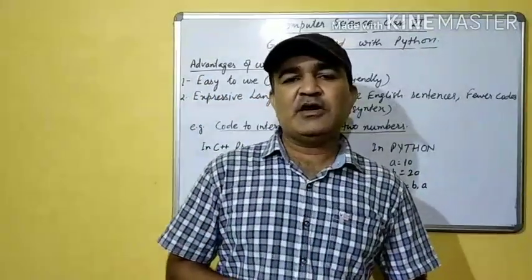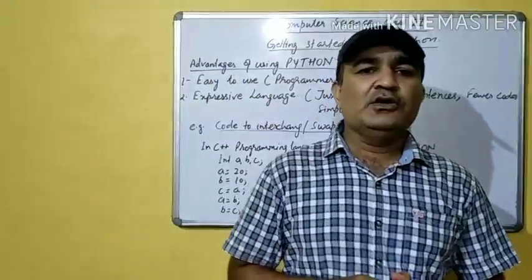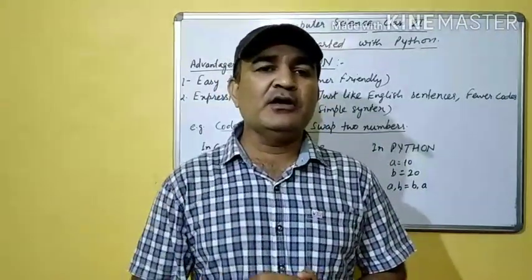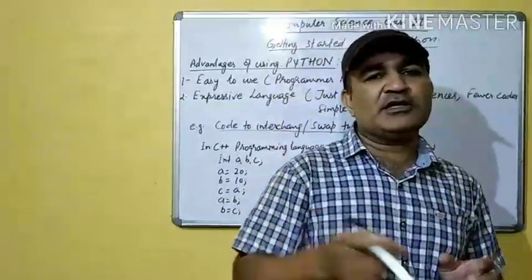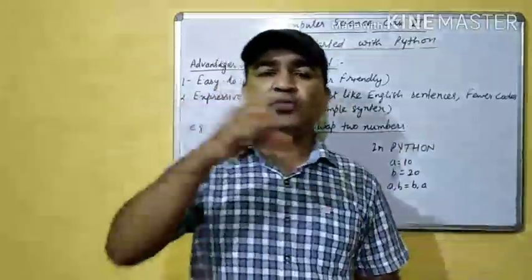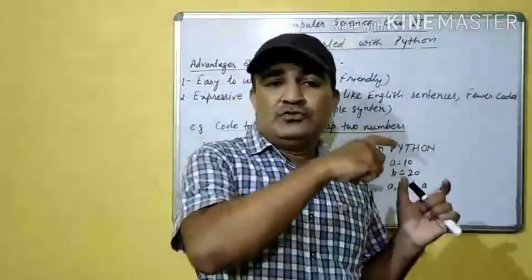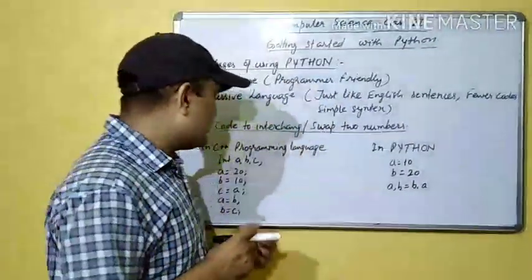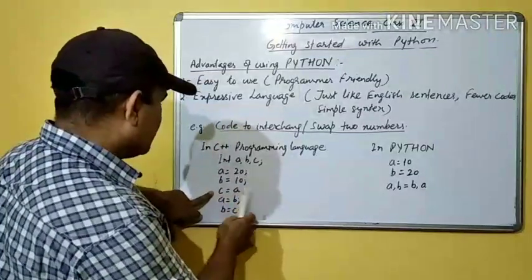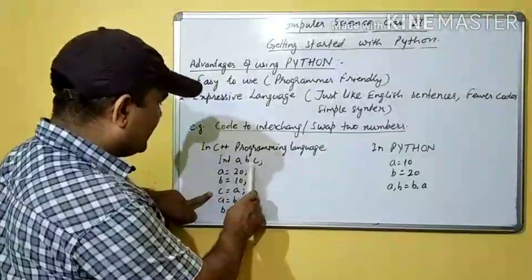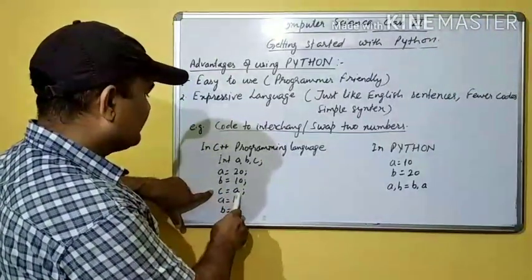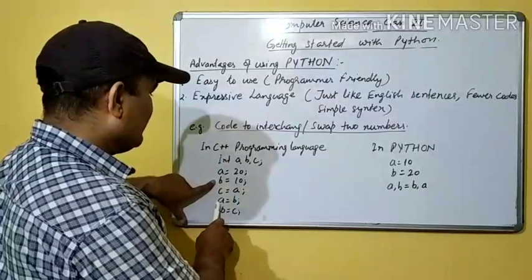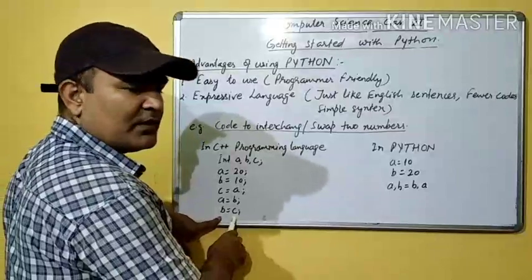To understand this swapping concept, think of three glasses — if you want to swap the contents of two glasses, you need a third empty glass. You first pour the contents of one glass into the third glass, then pour from the second into the first, and finally from the third into the second. Similarly, in C++ the third variable C holds the temporary value during swapping.